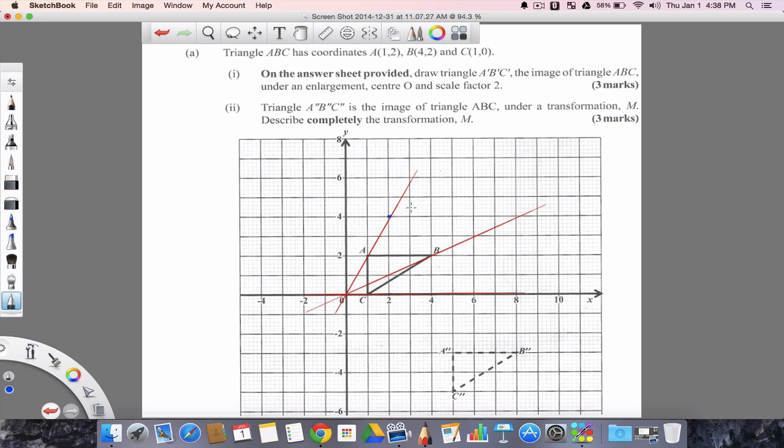So now we have marked A prime. We will do the same for B prime and C prime. So B was along the same line as A. Therefore, our point for B prime will be this point here. And our point for C prime, it was this vertical line from point A. And as we can see, our enlargement is a scale factor of 2. So 1, 2, our point for C prime is here.